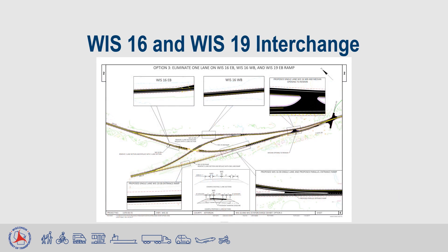This slide shows an exhibit of option three. As you can see in the typical section on the bottom middle of the exhibit, the existing sections highlighted had two 12-foot lanes with 10-foot shoulders. The finished section shows our selected typical section with one 12-foot lane, five-foot paved shoulders, and five-foot gravel shoulders. The detailed views of the segments shown illustrate how the permanent configuration will look after the project.